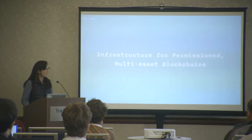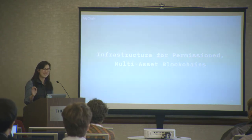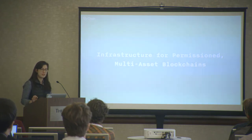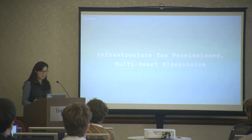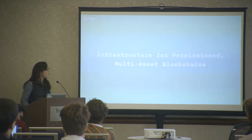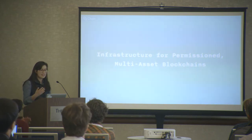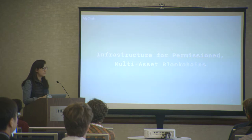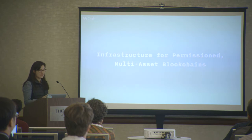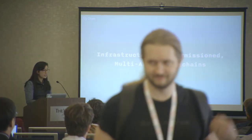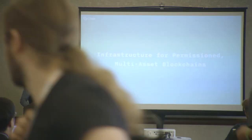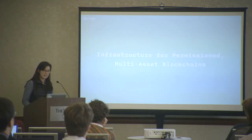If I had to succinctly describe exactly what we're building, I'd say that Chain builds infrastructure for permissioned multi-asset blockchains. When I say permissioned, I mean that the networks are closed — you need permission to join them. And when I say multi-asset, I mean that, unlike in Bitcoin, there's no native currency. Assets are issued onto the network instead of mined. As I said earlier, we don't use proof of work. Instead, we use a consensus model called federated consensus.